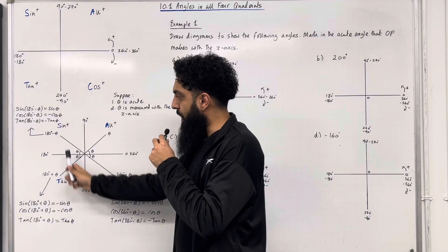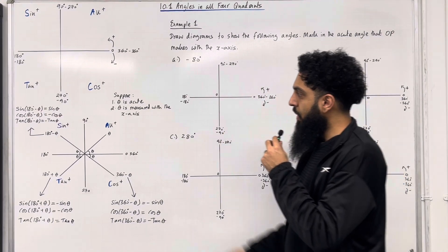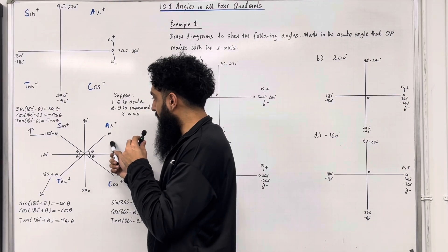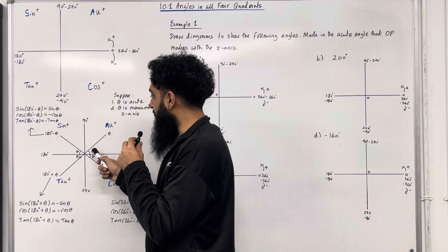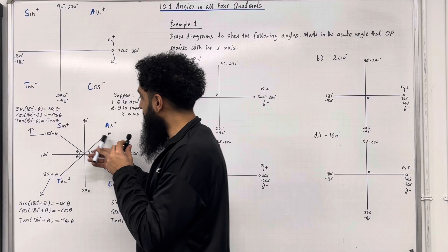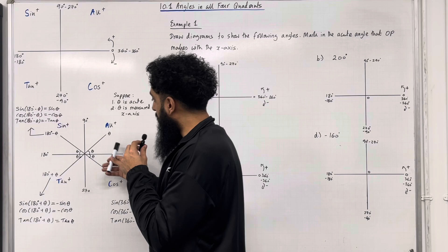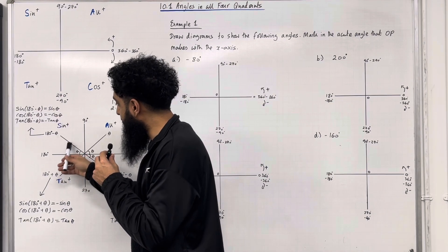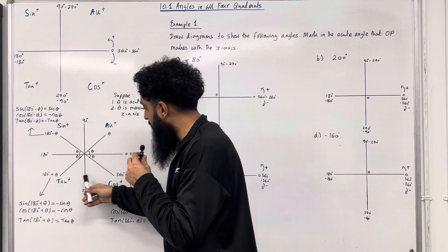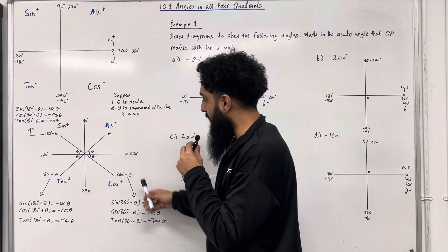I've drawn the CAST diagram again. Suppose theta is acute — between 0 and 90 degrees — and theta is measured with the x-axis. Going around to the first line, that angle is just theta. Going to the next line, the angle is 180 minus theta. Going to the third line, the angle is 180 plus theta. And finally, going all the way around, that angle is 360 minus theta.